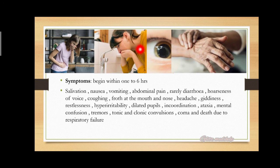Coming to the throat: hoarseness of voice and coughing. For the CNS and brain: giddiness, restlessness, hyper-irritability, incoordination, ataxia, mental confusion, tremors, tonic and clonic convulsions, coma, and finally death due to respiratory failure. In summary: salivation, nausea, vomiting, abdominal pain, hoarseness, coughing, headache, dilated pupils, froth, giddiness, restlessness, tremors, convulsions, coma, and death.